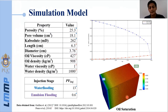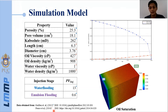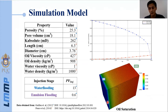Our simulation model is a representation of a core flood experiment made by Guillain in 2012. We chose this experiment for two reasons: first, it was made in-house and we know some details of the experiments; and second, this experimental data was also used by Pons in 2014 and 2016 for a different approach to represent emulsion flooding. Our model preserved the transversal area of the rock sample to guarantee that the Darcy velocity is respected, and the relative permeability curves were obtained through history matching of the water flooding process.